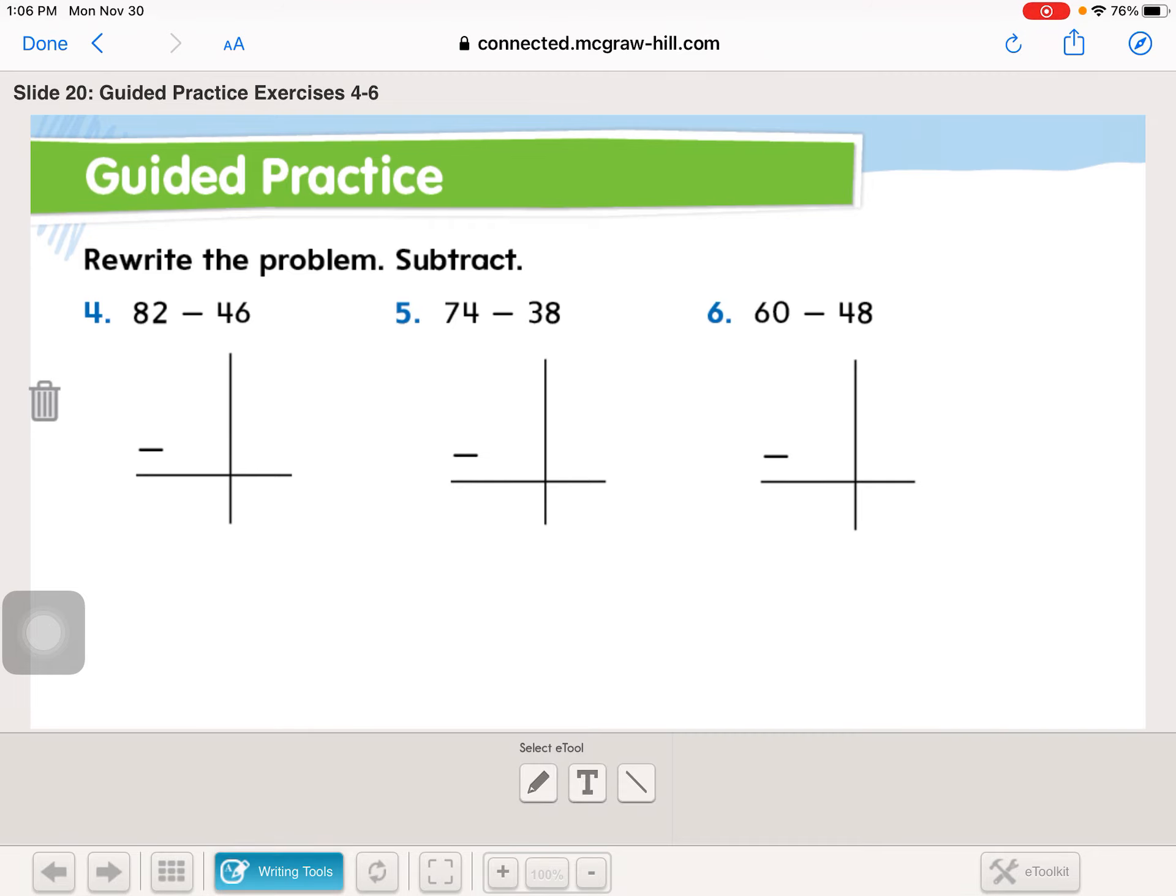So we're going to write these in. Let's check and see how you did. 82 minus 46. Go next door. Regroup 10 more. 12 minus 6 is 6. 7 minus 4 is 3. How'd you do? Did you get it right?